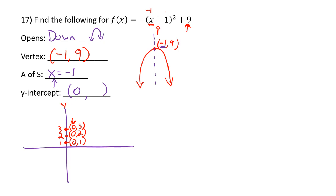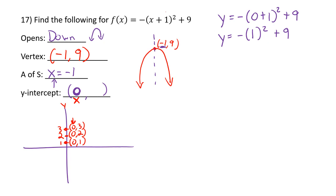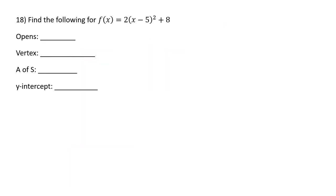To find the y-value of the y-intercept, substitute x equals 0 into the equation. Inside the parentheses: 0 plus 1 is 1. Then square it: 1 squared is 1. There's a minus sign, so that's negative 1. Then negative 1 plus 9 is 8. The y-intercept is at (0, 8).